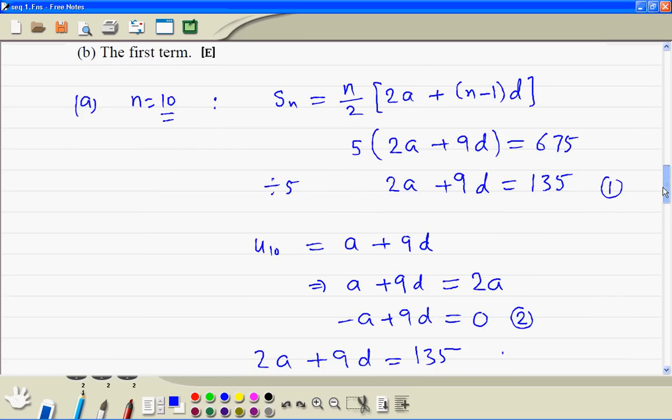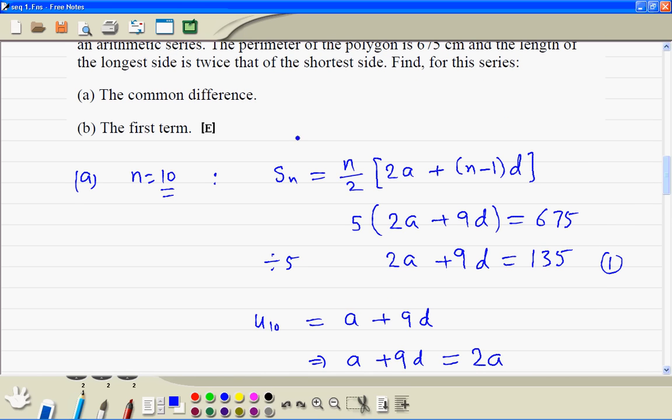So we can write the answer for both parts. The common difference is 5 and the first term is 45.